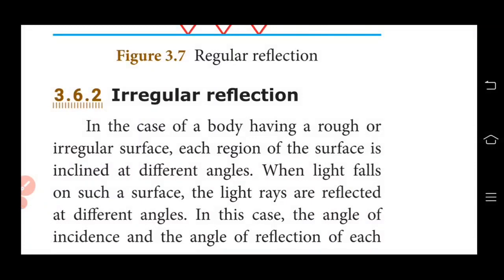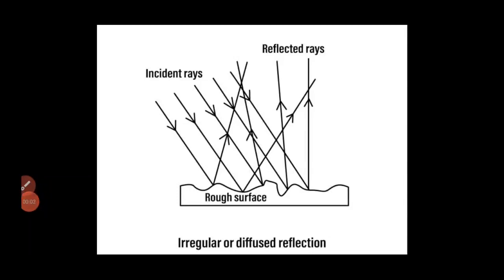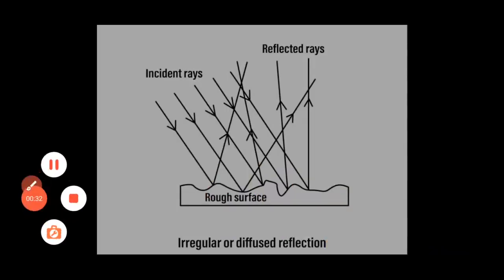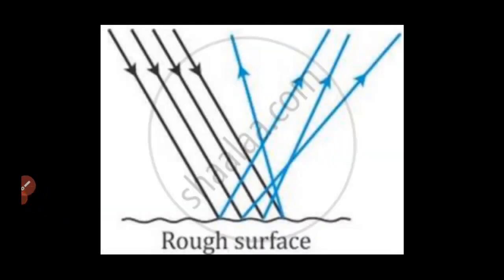Our next topic is irregular reflection. In the case of a body having a rough or irregular surface, each region of the surface is inclined at a different angle. When light rays fall on such a rough surface, they are reflected at different angles. Here the angle of incidence is not equal to the angle of reflection. Hence the law of reflection is not obeyed, and the image is not clear. Such reflection is called irregular reflection or diffused reflection.